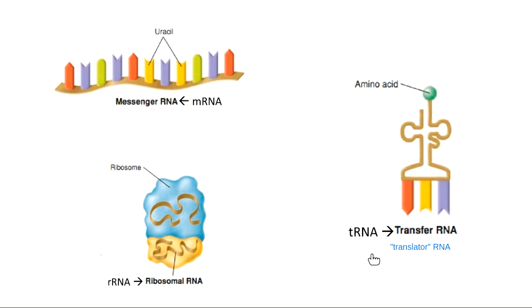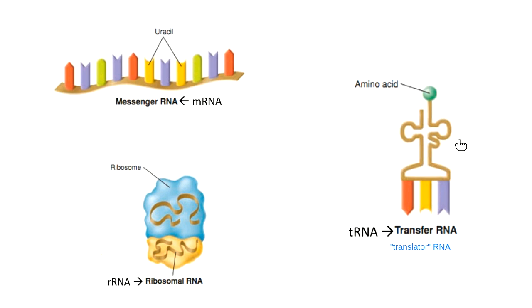So we have three kinds of RNA: messenger RNA that leaves the nucleus, ribosomal RNA inside the ribosome, and transfer or translator RNA that helps turn a message into a protein. When you see RNA in the lesson without a prefix, consider it mRNA — that's the most common kind we focus on this semester.